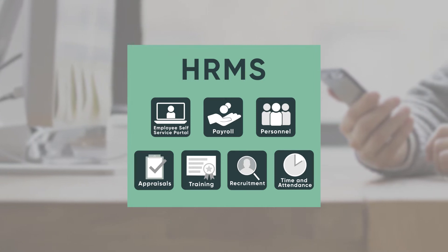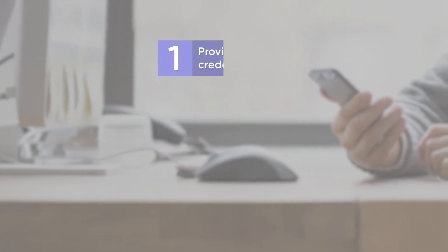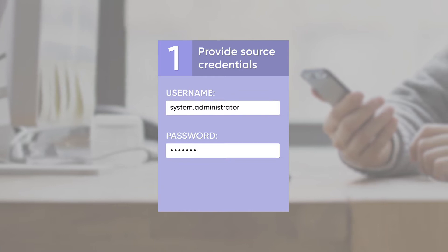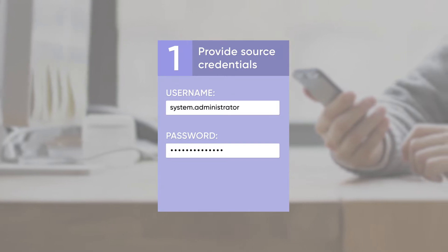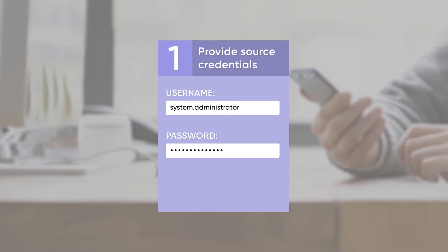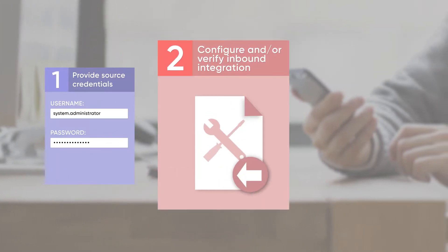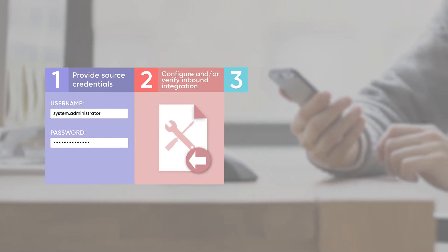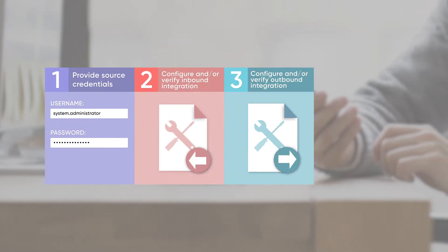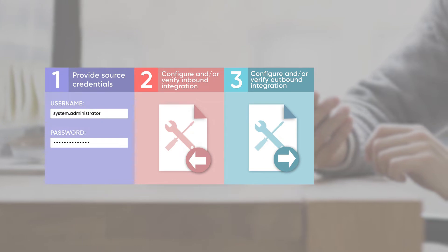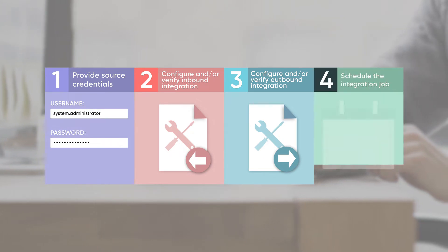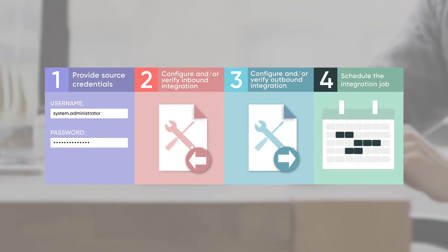Here's what the process looks like. First, you provide the source credentials so that HR service delivery can access the external system. Second, you need to configure and/or verify the inbound integration. Third, you repeat this step for the outbound integration. Finally, you schedule the integrations job.